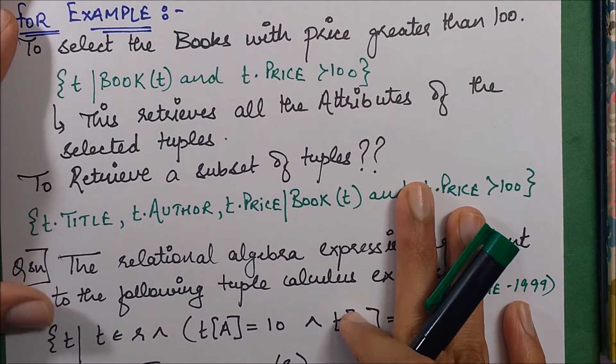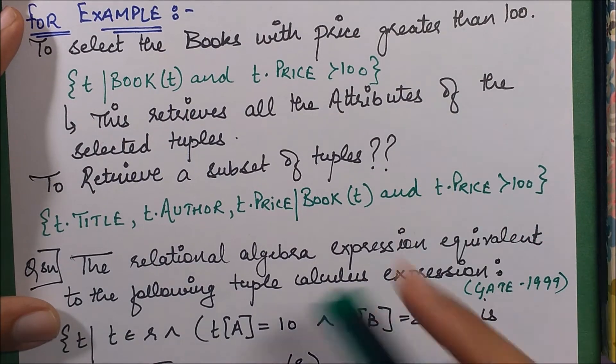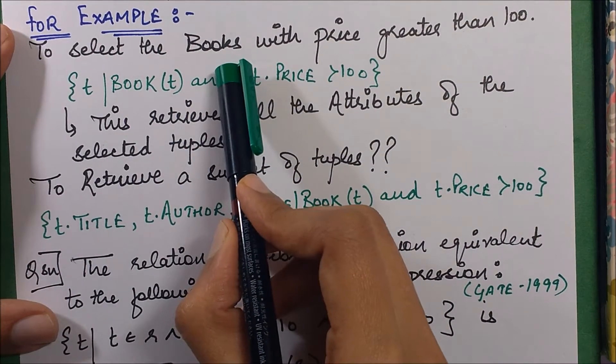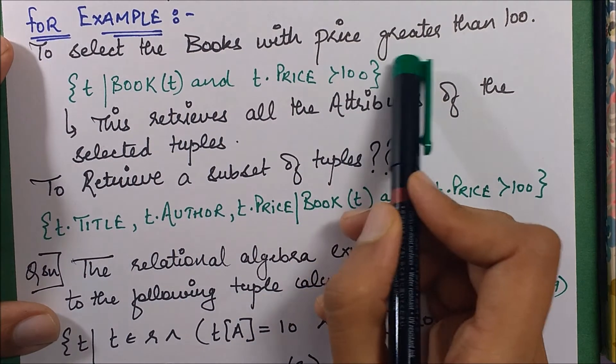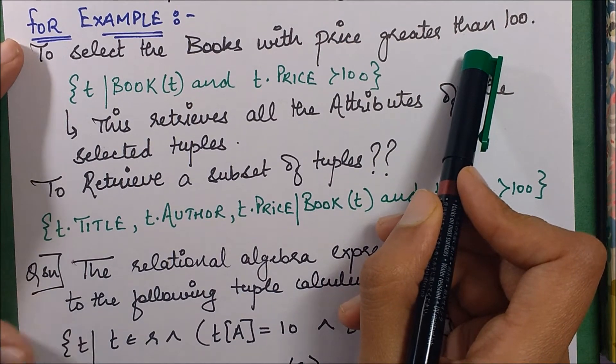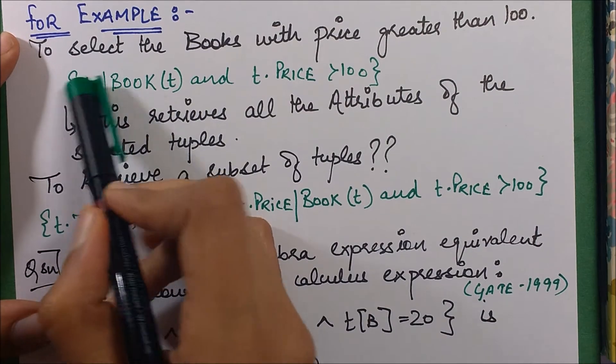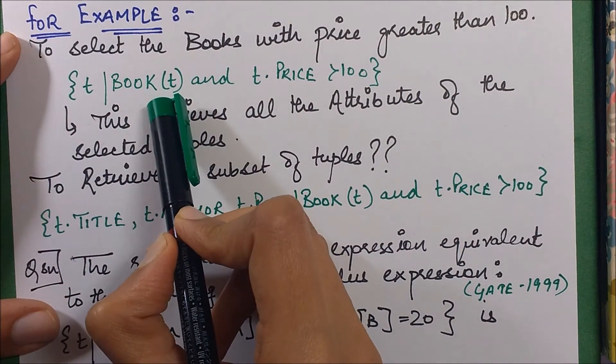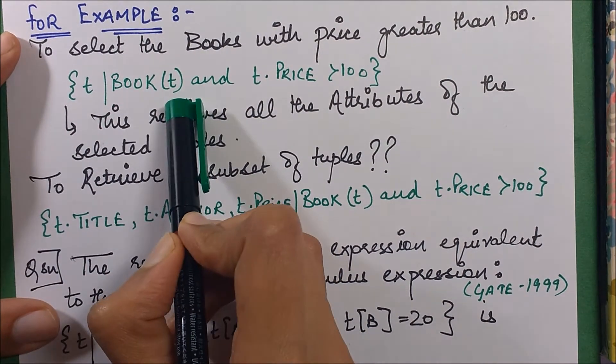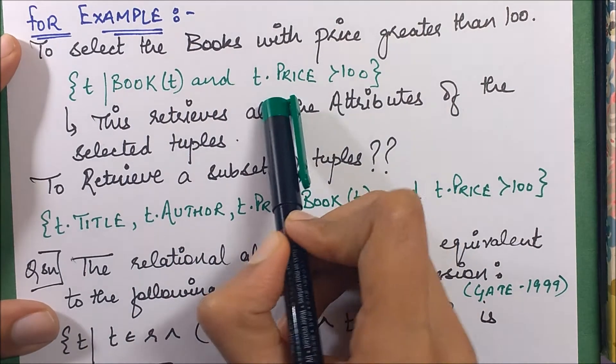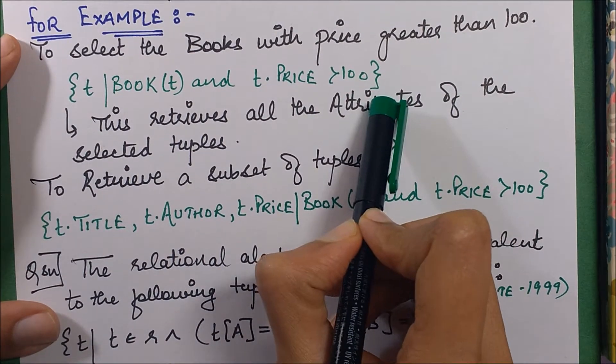We have an example: select the books with price greater than 100. The query corresponding to this will be: select those tuples which belong to relation book t, and t.price is more than 100. That's all.